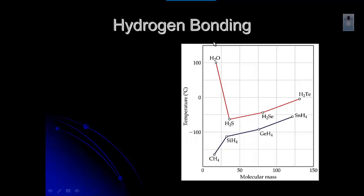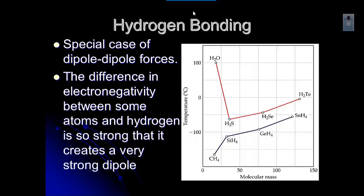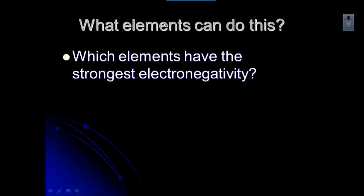So it's special because it has what's called hydrogen bonding, and that's a special case of dipole-dipole intermolecular forces. Everything that has hydrogen bonding has dipole-dipole forces. What happens is the difference in the electronegativity between certain atoms and hydrogen is so strong, it creates a really strong dipole. And so there are only certain elements that can do this. So think about which elements have the strongest electronegativity. Think about that periodic trend.